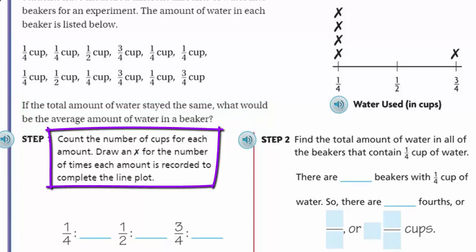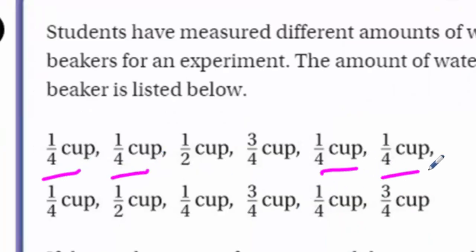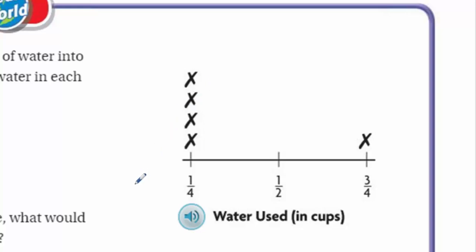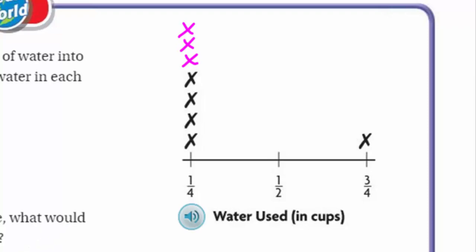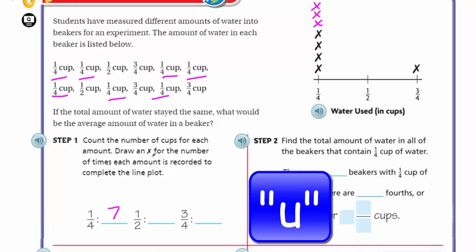Step one: count the number of cups for each amount. Draw an X for the number of times each amount is recorded to complete the line plot. So I see one, two, three, four, five, six, seven. I see seven of the quarter cups. And I see one, two, three, four on the line plot. So I need to add three more to have seven of them to complete that. I'm going to put a seven here. One half.